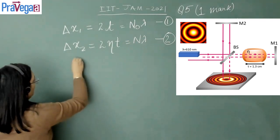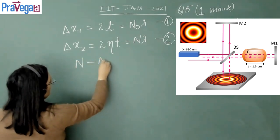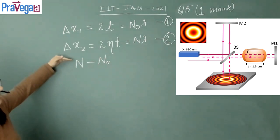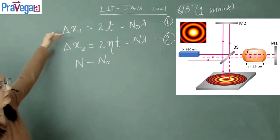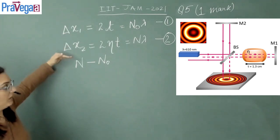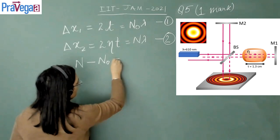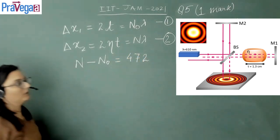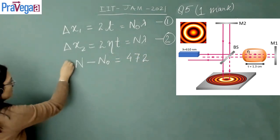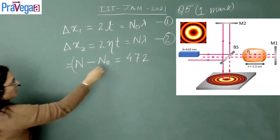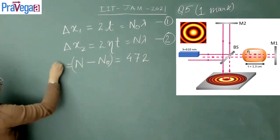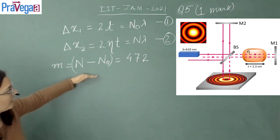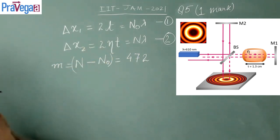It is given in the question that when going from the reference to the medium, the number of fringes that have collapsed is 472. This is the number of dark fringes that he has counted, because it is easier to calculate dark fringes. So we denote it as m. This can be calculated using both equations 1 and 2.